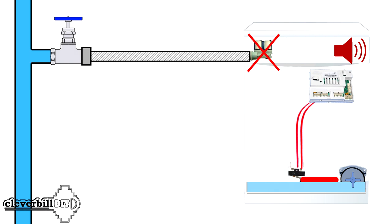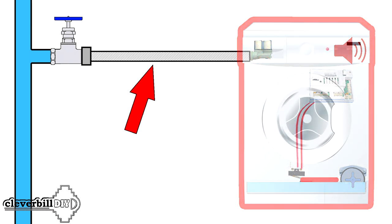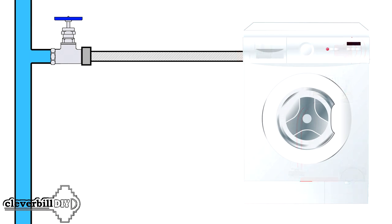Such a system protects the owner from possible water leaks inside the washing machine itself, but does not protect against a possible breakthrough of the inlet hose leading from the water main. Therefore, after using the washing machine to prevent leaks when the hose breaks, it is necessary to shut off the water supply with the tap.